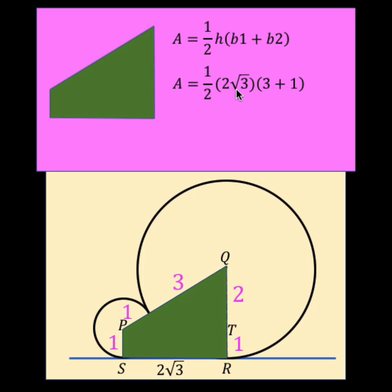Substituting the height and the base values, we have the height equals 2 square root of 3, that is the length of segment SR. Base 1 is this radius, which is 3 units, and base 2 is this other radius, which is 1 unit. Simplifying, this gives us 4 square root of 3 for the area of this trapezoid.